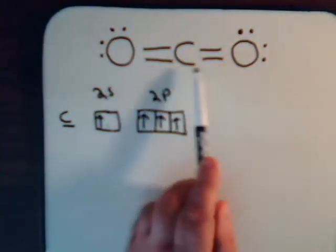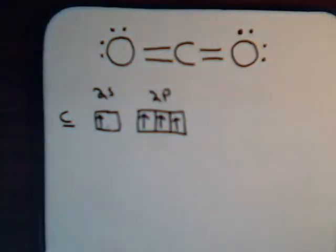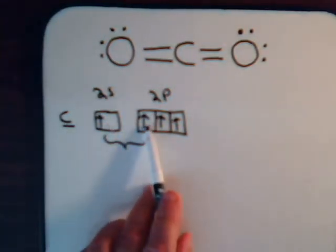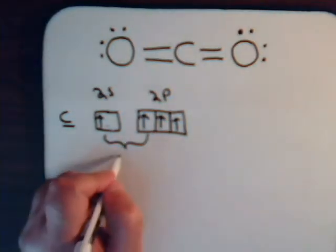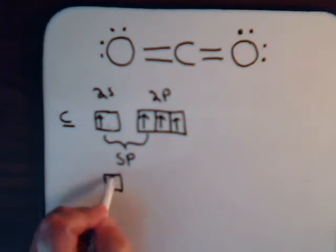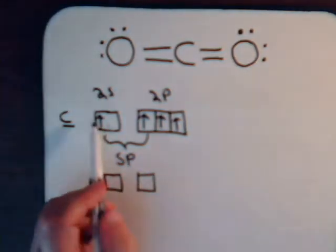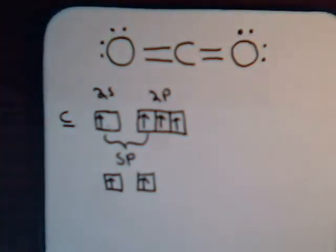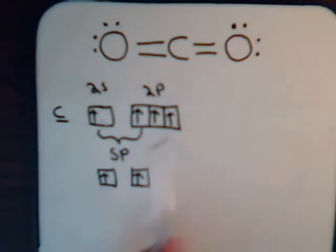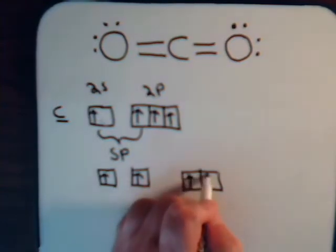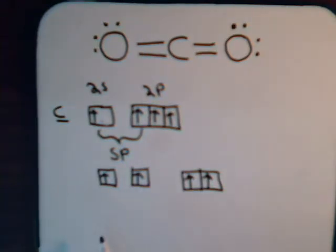Here we have two sigma bonds and two pi bonds. So if these hybridize — one s orbital and one p orbital — we're combining two atomic orbitals, we get two equivalent sp molecular orbitals, each one with an electron. And then we have left over two unhybridized p electrons. The geometry here is that these sp orbitals are 180 degrees apart.